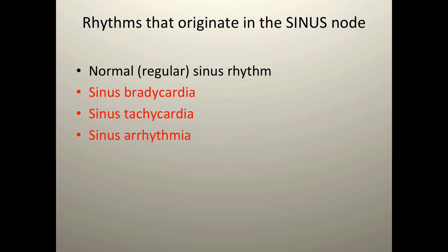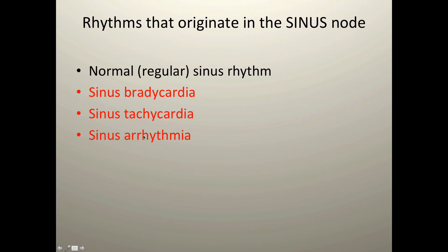When we have a P wave that's upright and precedes the QRS complex, we call that a sinus rhythm, and now we need to differentiate the types. There are four total: normal sinus rhythm, sinus bradycardia, sinus tachycardia, and sinus arrhythmia or sinus dysrhythmia — I'll use those two terms interchangeably. Let's take a look at sinus bradycardia. Remember, the only difference between normal sinus rhythm and sinus bradycardia is the rate; everything else is exactly the same.